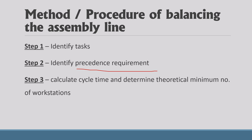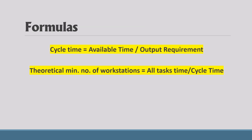Step 3 is to calculate cycle time and determine the theoretical minimum number of workstations. Cycle time is the time required to complete a task at one workstation. The formula is: cycle time equals available time divided by output requirement. For example, for a pencil, if available time is 5 days and you need to manufacture 100 pencils, dividing available time by 100 gives you the cycle time.